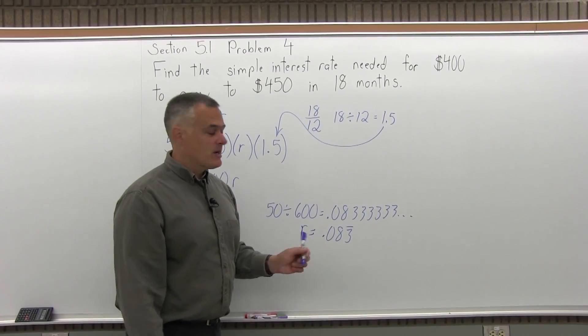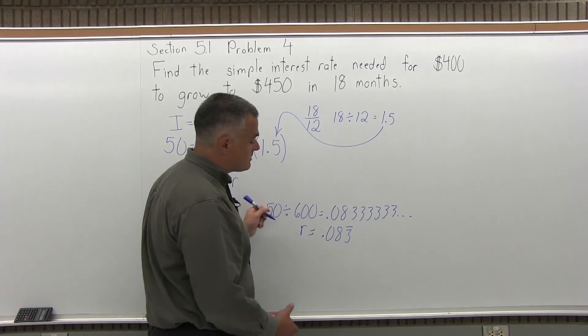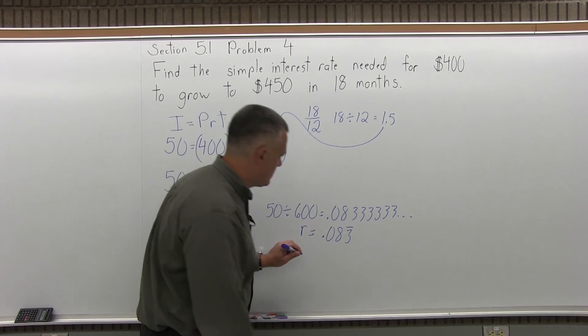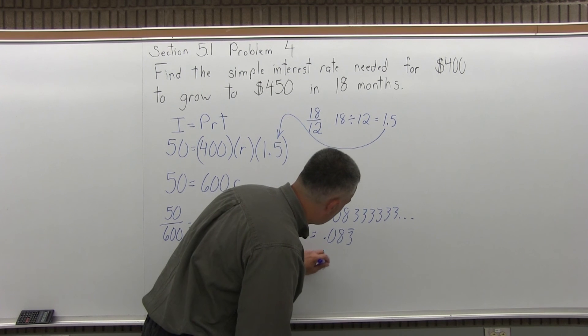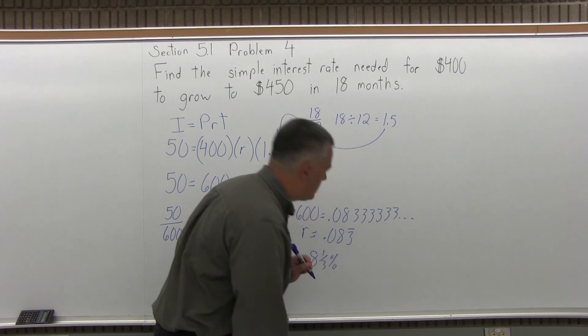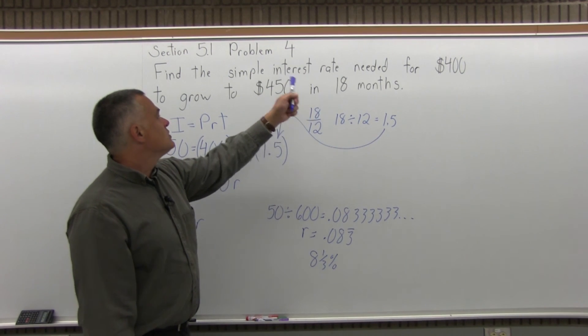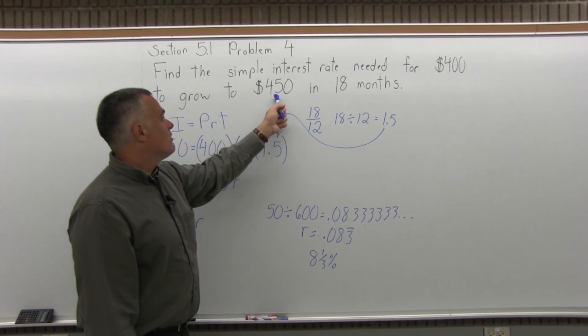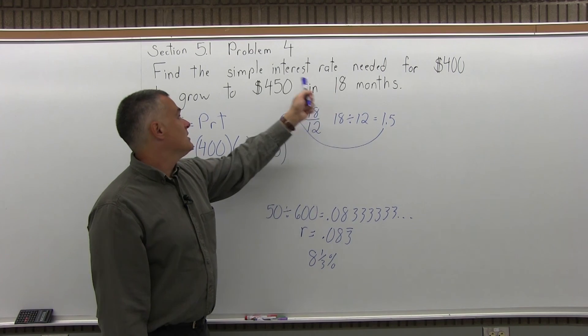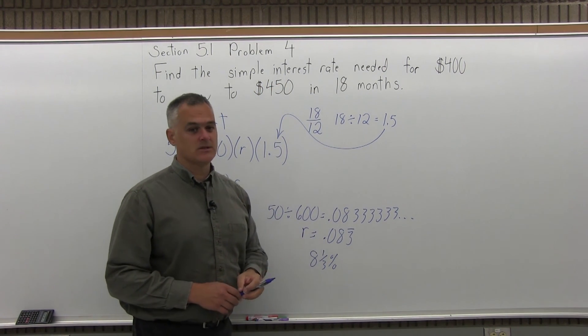and that's the correct answer. Or if you prefer percents, because some people like to think of the rate as a percent, you can say that is 8 and a third percent. Either answer is completely acceptable. That's the rate you would need to make $400 grow to $450 in 18 months as a simple interest rate. Compound interest would be a different answer.